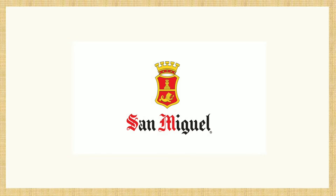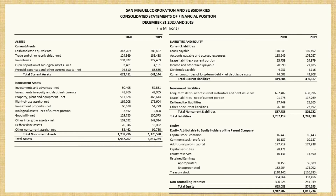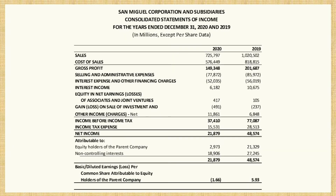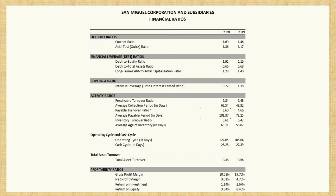Similar with other companies in the country, 2020 was the year that changed how they operate and generally the turning point of their business. By analyzing the financial aspects of the corporation, we will be able to see the extent of the impact the pandemic has brought to the company. Here is the consolidated statement of financial position of San Miguel Corporation and subsidiaries for the years 2020 and 2019, expressed in millions, and the consolidated income statement for the years 2020 and 2019. I will be using ratio analysis to provide a summarized and concise study of the relationships among various financial factors shown in a series of statements.